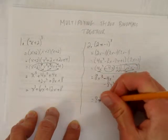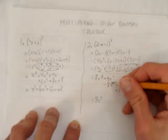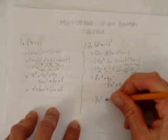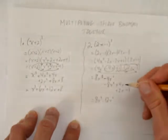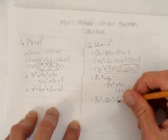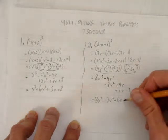So, I get 8x cubed minus 4x squared minus 8x squared is minus 12x squared. Plus 4x plus 2x is plus 6x. And minus 1 by itself.